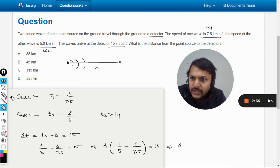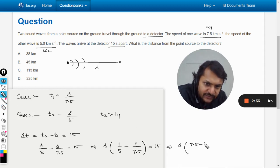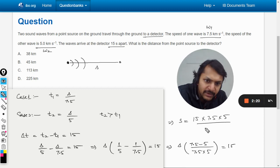You just take the LCM: (7.5 - 5) divided by (7.5 × 5). If things are clear, you can find s: 15 × 7.5 × 5 divided by 2.5.